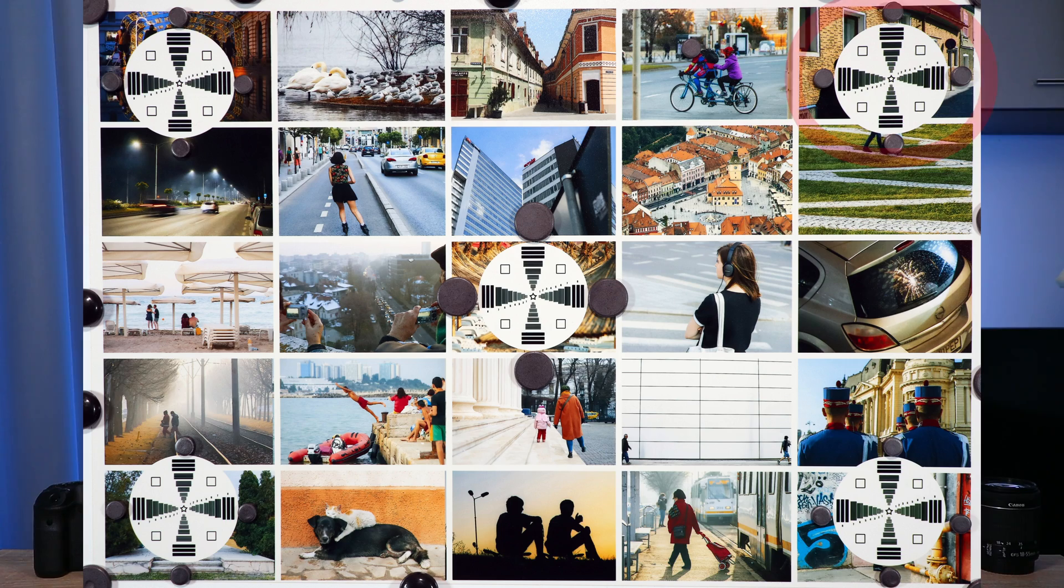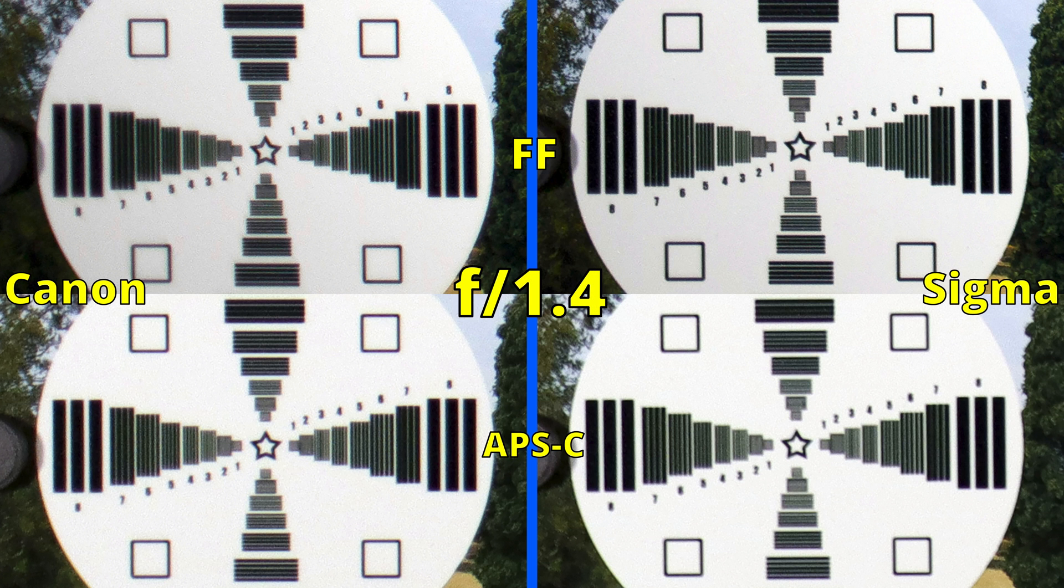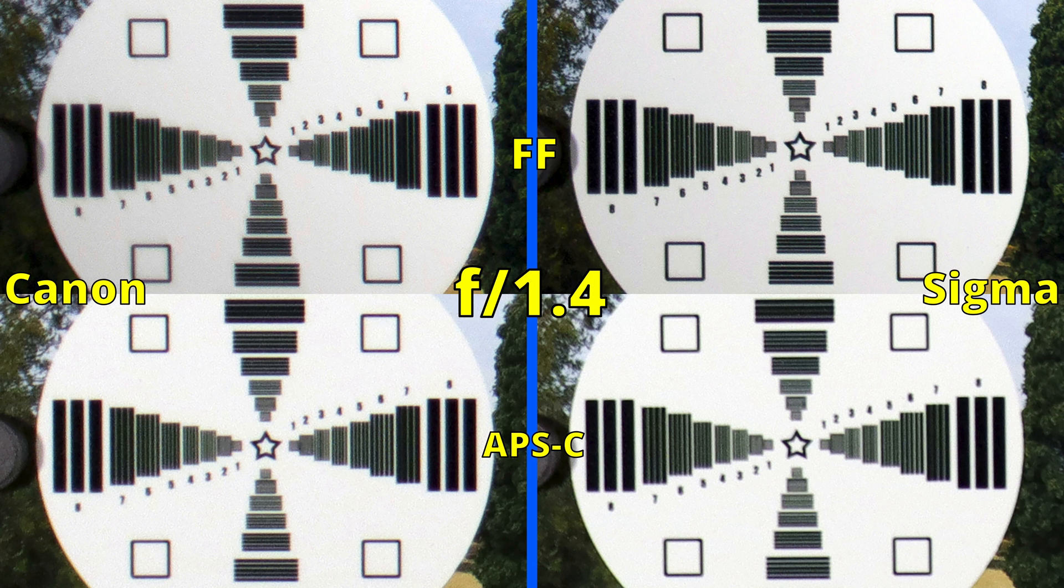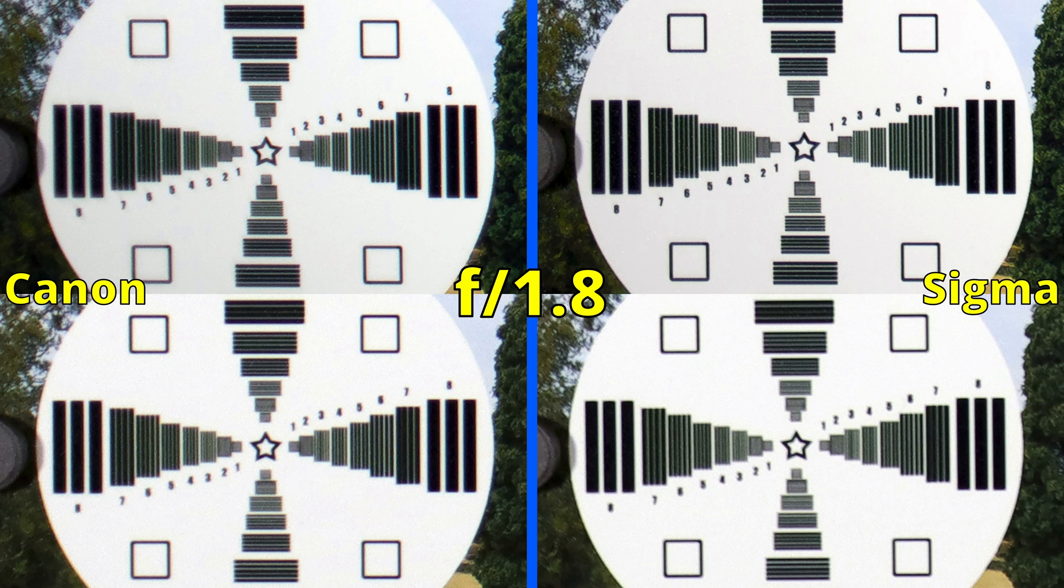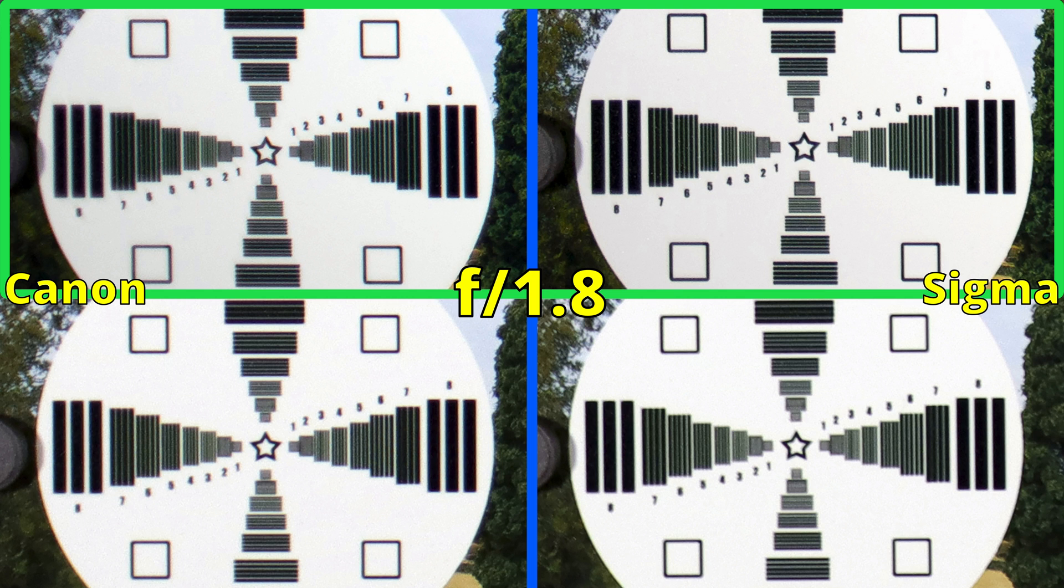Let's now see who wins the second round, sharpness in the corners. At f1.4, on both lenses, we don't see a good performance but the right side looks a bit better. Stopping to f1.8 and we only have significant improvements on full frame. Again, the Sigma seems to be better.